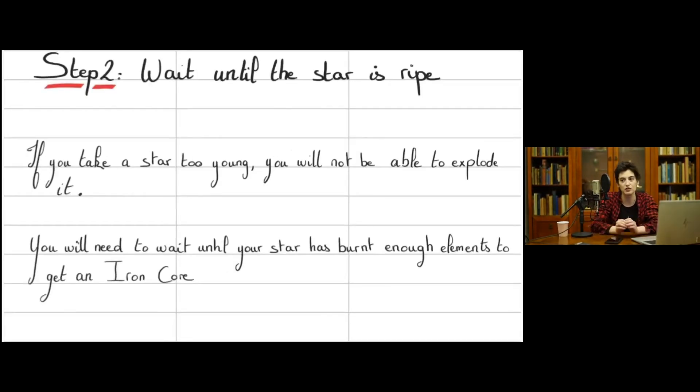Once you have your star, you need to be sure that it's at the right stage of its life. If you take a star that is too young, it will not be able to explode. You need to wait until the fusion in the core of your star has managed to produce enough iron. The fusion goes from burning hydrogen into helium, helium-carbon, and you go on like that, until iron. Iron is the most stable element, so this is when the fusion will stop. You want to have a nice iron core, more or less two solar masses, two, three solar masses, something along that line.